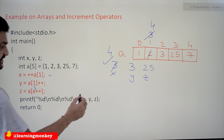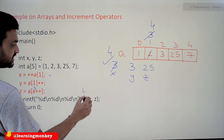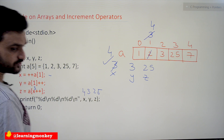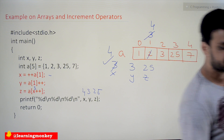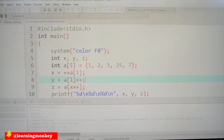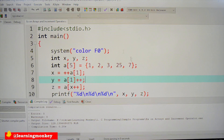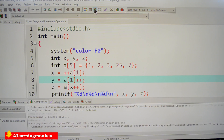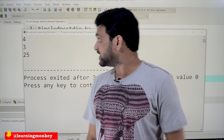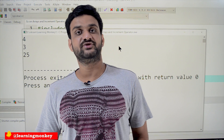The value of z is a[3] which is 25. So what will get printed: x is equal to 4, y is equal to 3, and z is equal to 25. This is the final output. Let's execute this and see whether we get the same output. Here — 4, 3, 25. The value of x is 4, value of y is 3, and the value of z is 25.